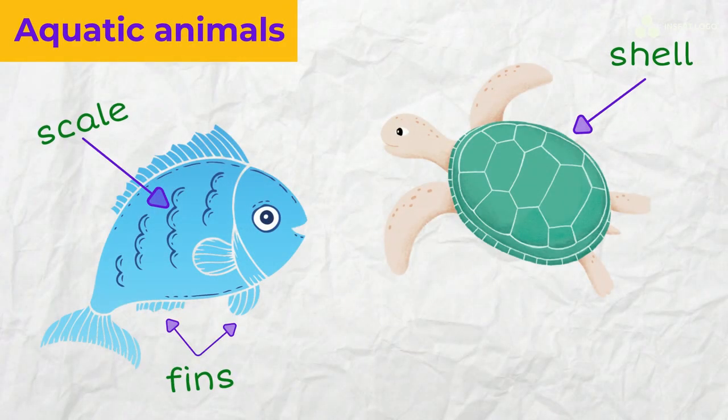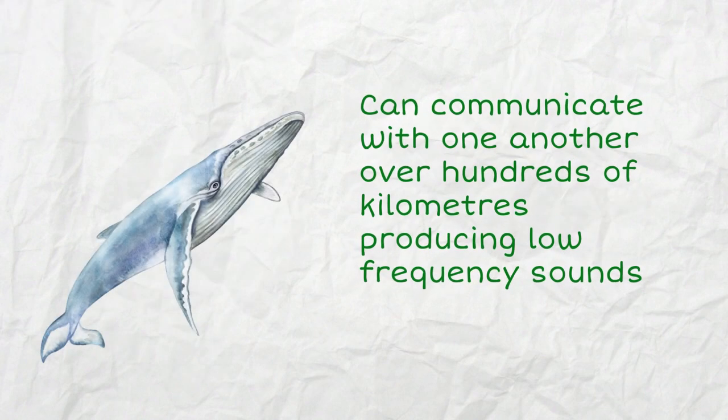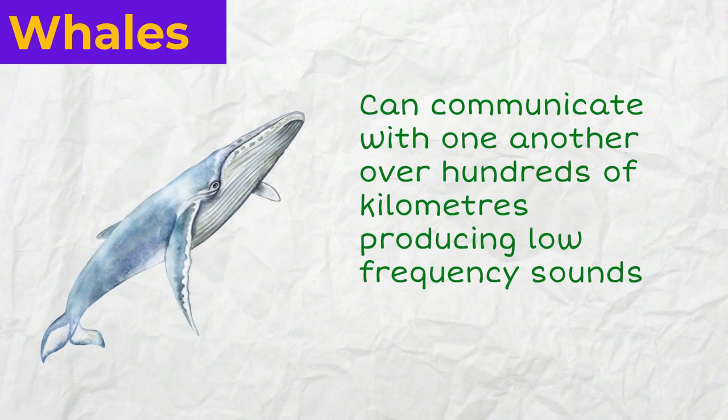A large number of aquatic animals have fins, scales, and some of them shells for protection. By the way, whales can communicate with one another over hundreds and even thousands of kilometers, producing special low-frequency sounds and sending them through the water. So they really do not need a smartphone.